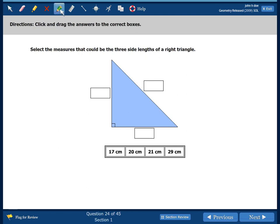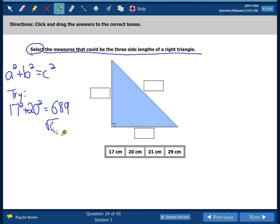This problem says select the measures that could be the three side lengths of a right triangle. So we have to use the Pythagorean theorem, A squared plus B squared equals C squared. So let's try some things out. Let's try 17 squared plus 20 squared. Whenever we do that we get 689. The square root of 689 is about equal to 26.2 and it goes on forever. So we see that that's not going to be a Pythagorean triple. 17 and 20 aren't going to be our answers. So we have to try something else.